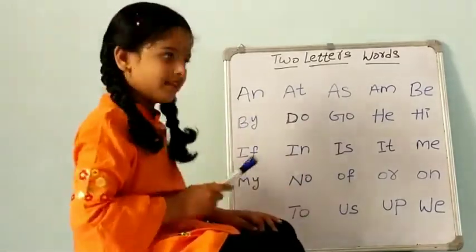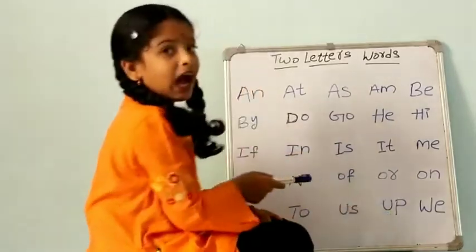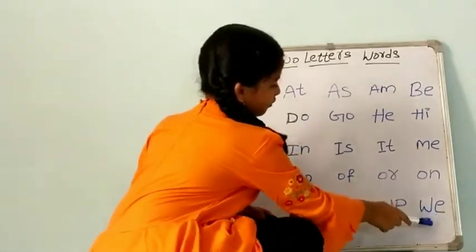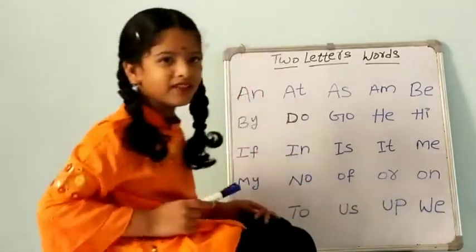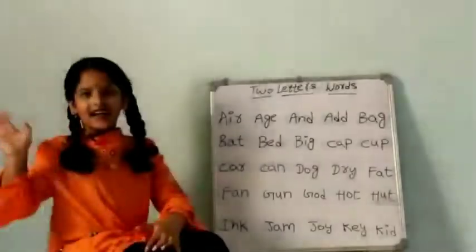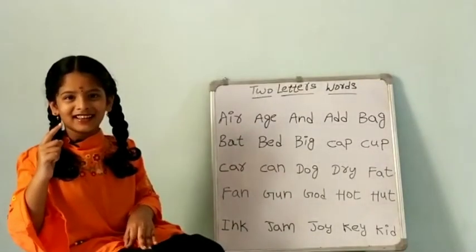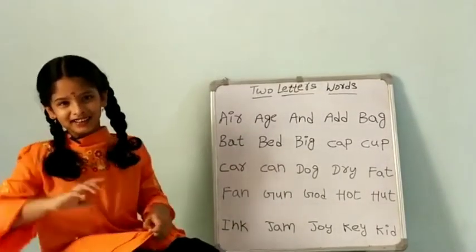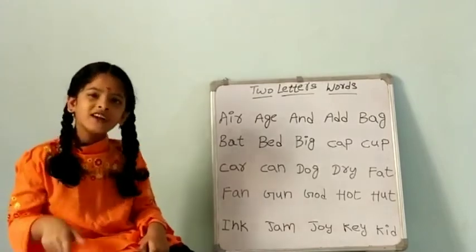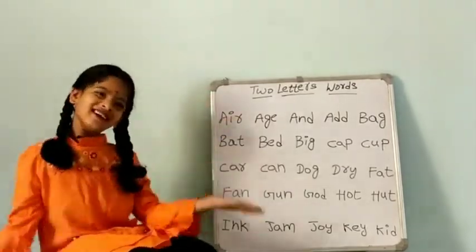U, S, us. U, P, up. W, E, we. Now three letter words.